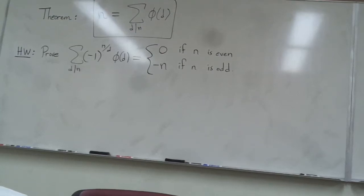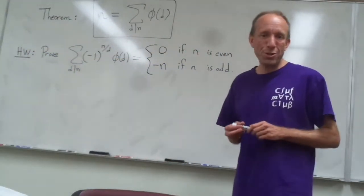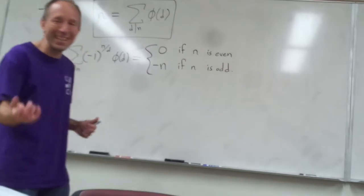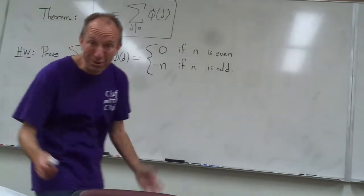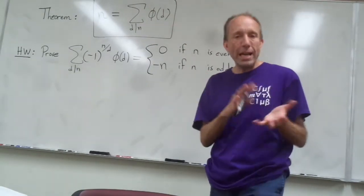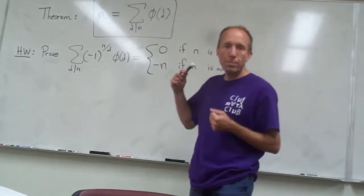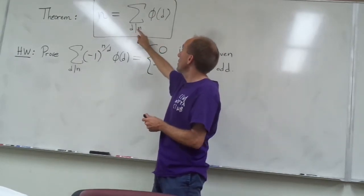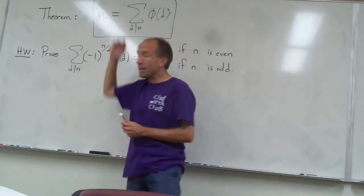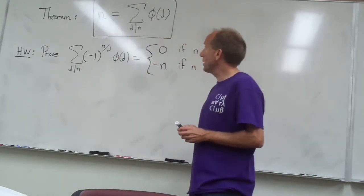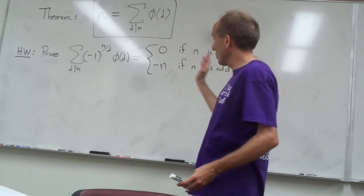Hey guys, I promised I would step in and give you a little hint on that very first problem out of section 7.4 from the homework — though I'm probably going to be more than just a hint. I just really like this problem, so watch the video and you'll probably get pretty far on how to do it. It's a nice variation on the theorem of Gauss from this section that we proved in class. Remember that if you add up phi of d over all divisors d of n, it has to add up to exactly n. We can use that theorem and model the proof of it to prove this homework problem.